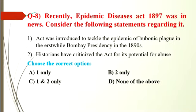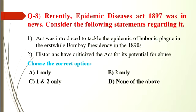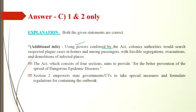Question number 8: the Epidemic Diseases Act 1897 was recently in news. Statement 1: the Act was introduced to tackle the epidemic of bubonic plague in the then Bombay Presidency in 1896. Statement 2: historians have criticized the Act for its potential for abuse. Both statements are correct, so the answer is option C. Using powers conferred by the Act, colonial authorities would search suspected plague cases in homes and among passengers, with forceful segregation, evacuation and demolition of infected places. The Act consists of four sections aiming to provide better prevention of the spread of dangerous epidemic diseases. Section 2 empowers state governments to take special measures and formulate regulations for containing outbreaks.